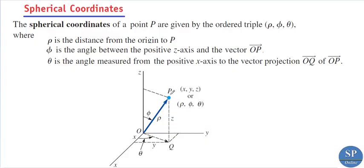Consider a point P in Cartesian space with rectangular coordinates x, y and z. The spherical coordinates of this point P are given by the ordered triple (ρ, φ, θ). In the last class we discussed cylindrical coordinates which are (r, θ, z), and the spherical coordinates of point P are (ρ, φ, θ).